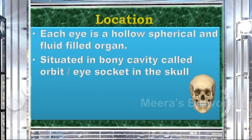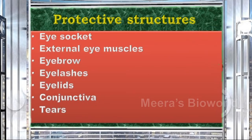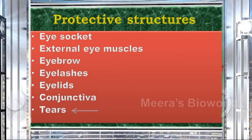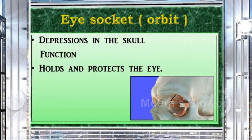First, let's see the location of the human eye. Each eye is a hollow, spherical, and fluid-filled organ situated in a bony cavity called the orbit or eye socket in the skull. The protective structures enhance the well-maintenance of the eye. These include the eye socket, external eye muscles, eyebrows, eyelashes, eyelids, conjunctiva, and tears. The eye socket, also known as the orbit, is a depression in the skull whose main function is to hold and protect the eye.